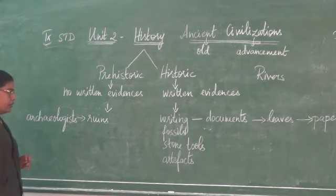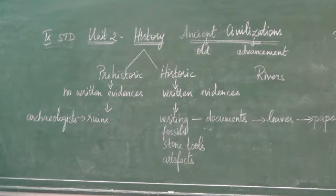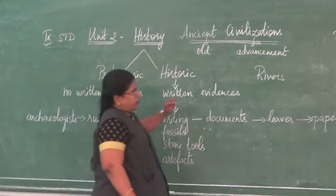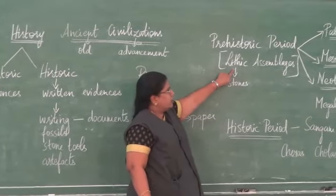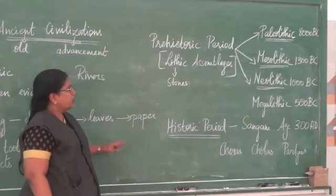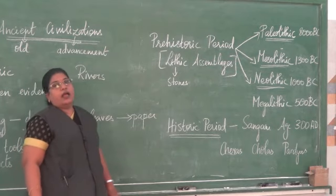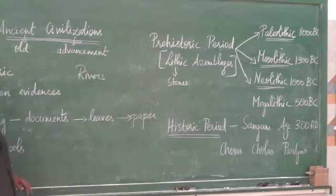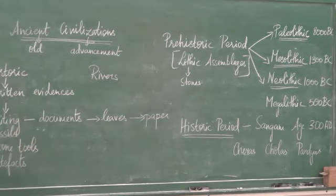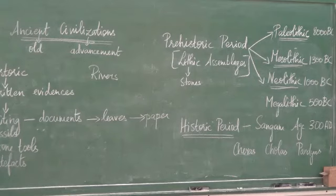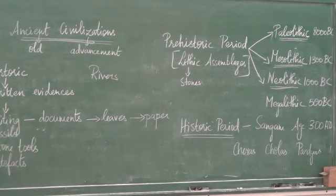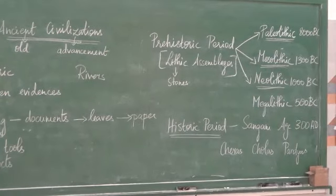Apart from that, fossils were found, stone tools and artifacts. The prehistoric period consists of lithic assemblages — lithic means stones. Those people found out different methods of using stones to make weapons and utensils, and slowly they started developing technology. This is called lithic assemblages. We have three types: Paleolithic, Mesolithic and Neolithic.